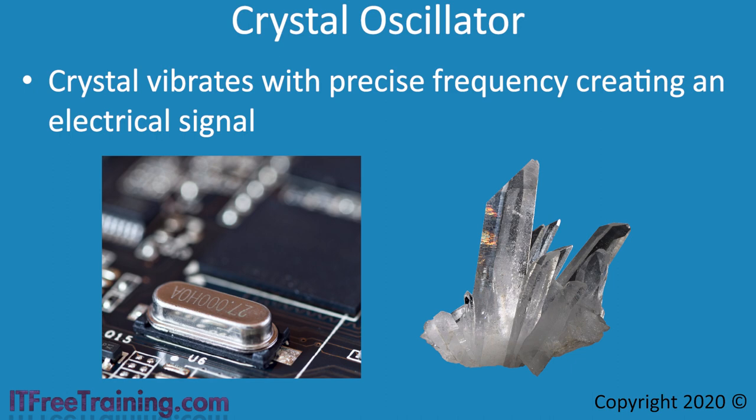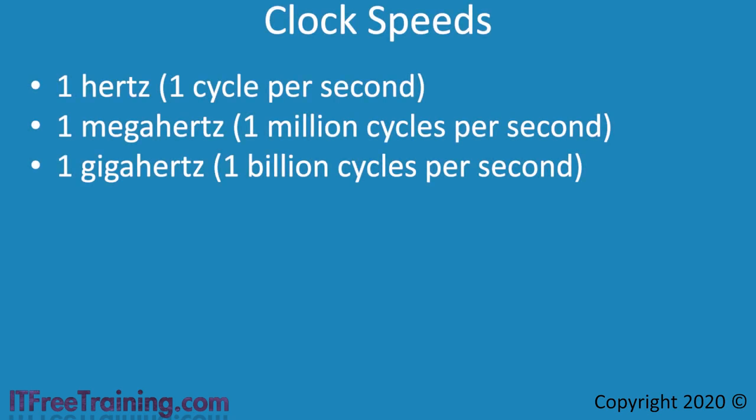Oscillators don't run very quickly. The speed of them is measured in megahertz, so the question is, how does a high clock rate get generated? Before I look at how this is achieved, I will first look at how the clock rate is measured.